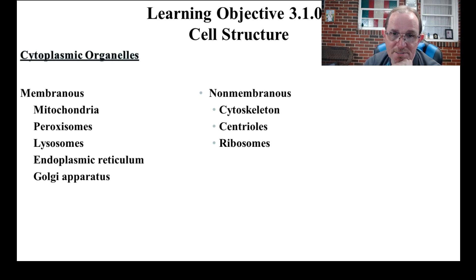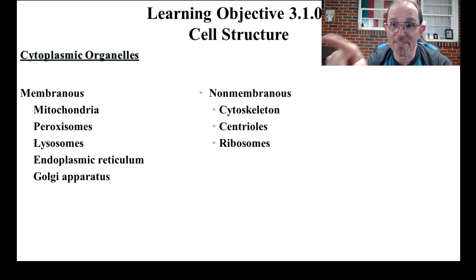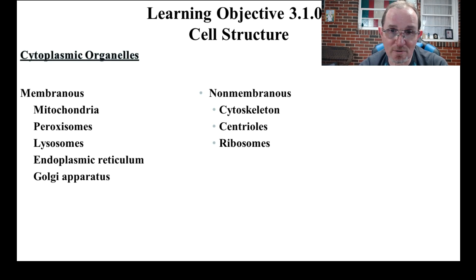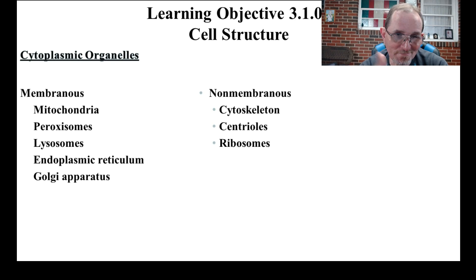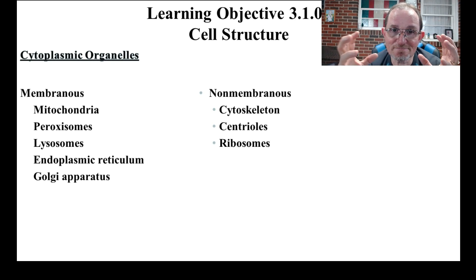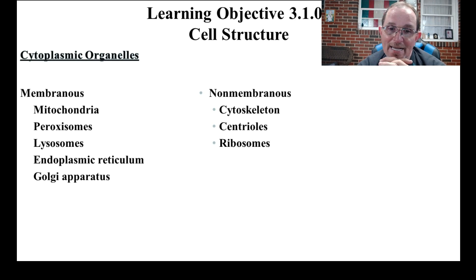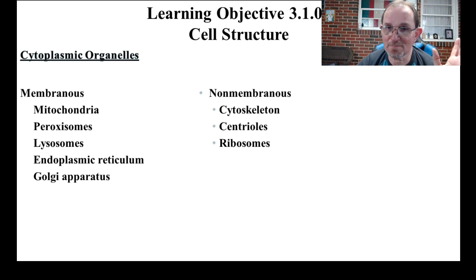As far as our organelles, they come in two flavors: membranous and non-membranous. Membranous means these organelles are also surrounded by a phospholipid bilayer. The membranous ones include the mitochondria, peroxisomes, lysosomes, endoplasmic reticulum (two types), and the Golgi apparatus. The non-membranous ones are going to be the cytoskeleton — fibers that reinforce the shape of the cell — the centrioles, which make fibers involved in cell division, and ribosomes, which are organelles that make proteins.